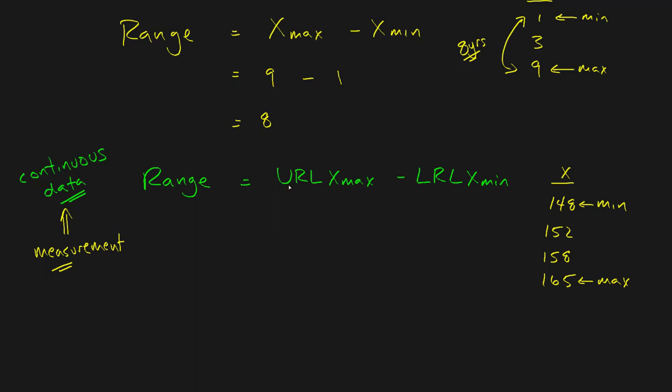If I have a measurement, that's automatically continuous data. I've got my minimum measurement and my maximum measurement, but I'm not just going to do 165 minus 148. Instead, I have to do the upper real limit of 165 - that just means a half step above, so that's 165.5 - minus a half step below because it's the lower real limit of 148, which is 147.5. When I work out the range now, I've got 165.5 minus 147.5.